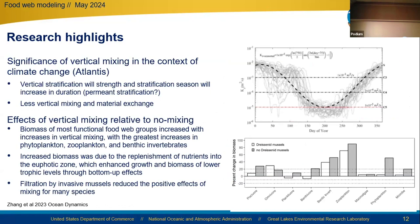Highlighting some recent work using the Atlantis Ecosystem 3D modeling framework for Lake Michigan, we modeled potential effects of vertical mixing on the food web. This is part of our ongoing efforts looking at climate change effects. The effect on vertical mixing was our first step, as climate change is expected to affect the timing and duration of vertical stratification, and thus the vertical transfer of materials. Our efforts suggest that the biomass of most functional groups increased with increased vertical mixing, with the greatest increases in phytoplankton, zooplankton, and benthic invertebrates. Increased biomass was due to replenishment of nutrients into the euphotic zone, which enhanced growth of lower trophic levels. Filtration by invasive mussels reduced the positive effect of vertical mixing for many species — important in the context of climate change, where less vertical mixing is expected.